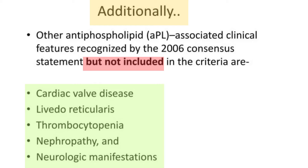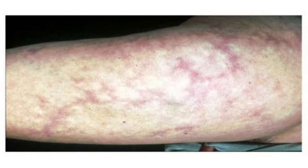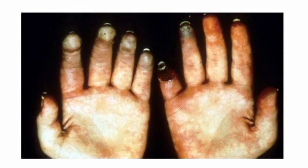Beyond vascular thrombotic events and pregnancy-related complications, there are additional clinical features not included in the formal criteria but associated with antiphospholipid syndrome. These include cardiac valvular diseases, livedo reticularis, thrombocytopenia, nephropathy, and neurologic manifestations other than vascular thrombotic events. If any of these features are present, clinicians should work up for antiphospholipid antibody syndrome.